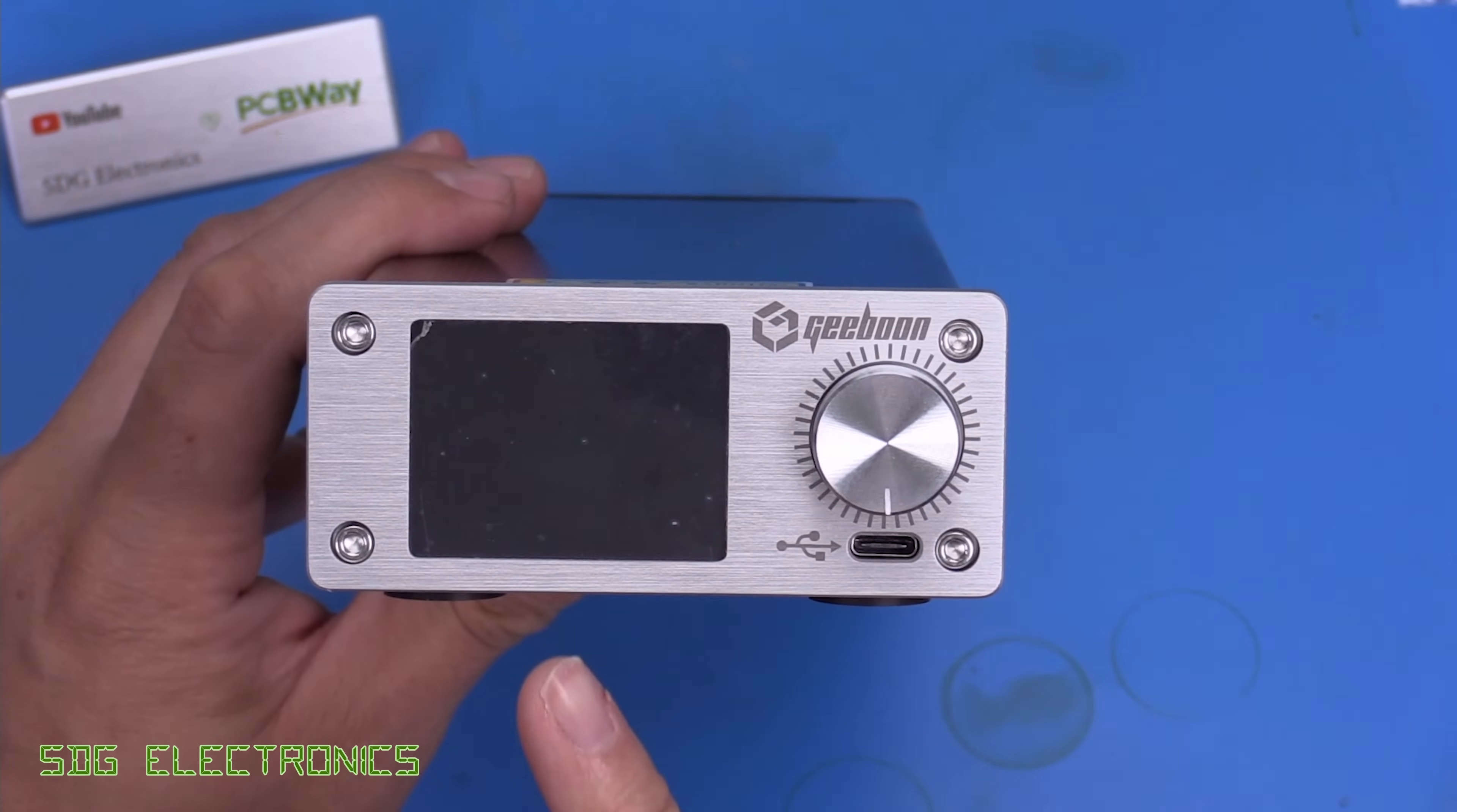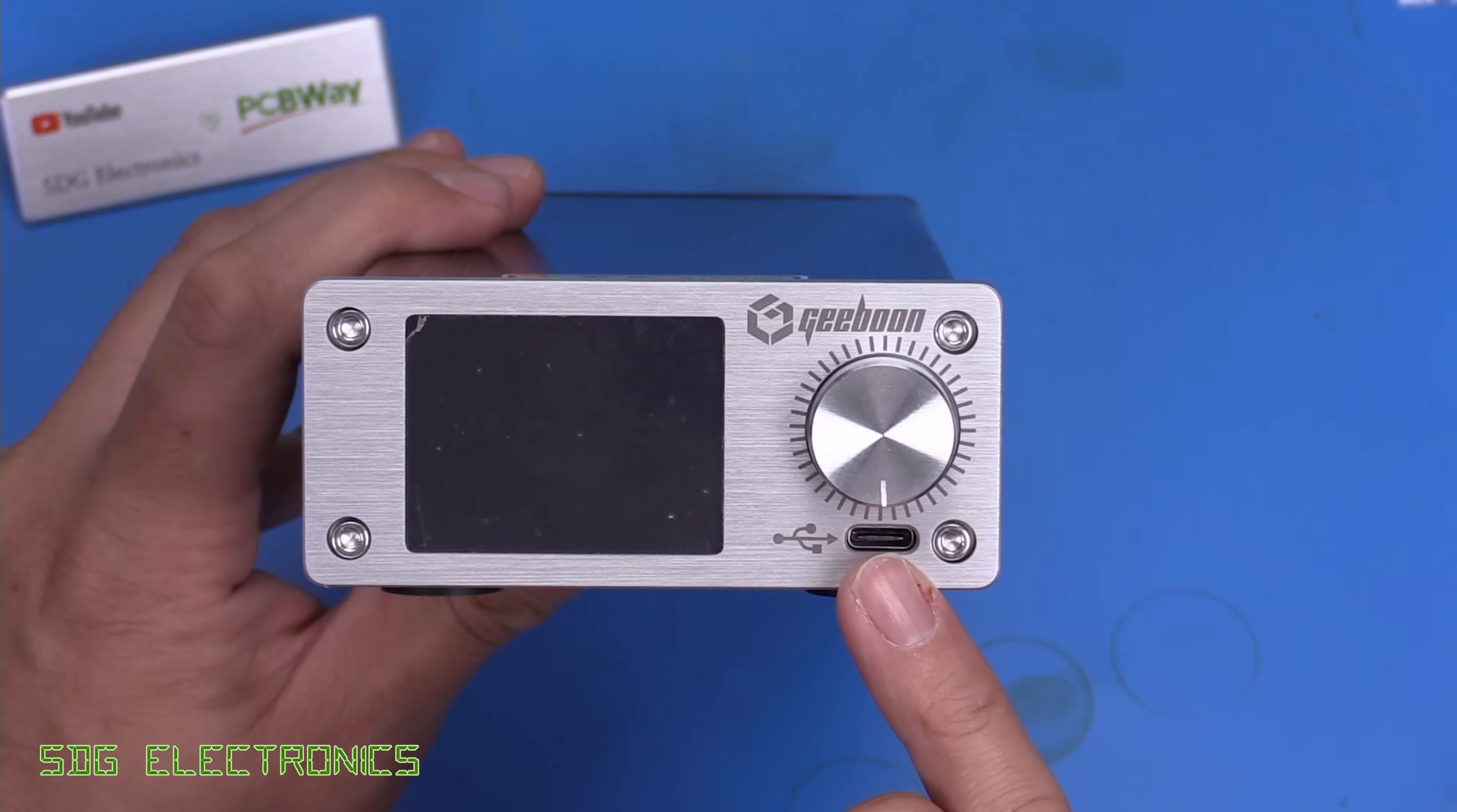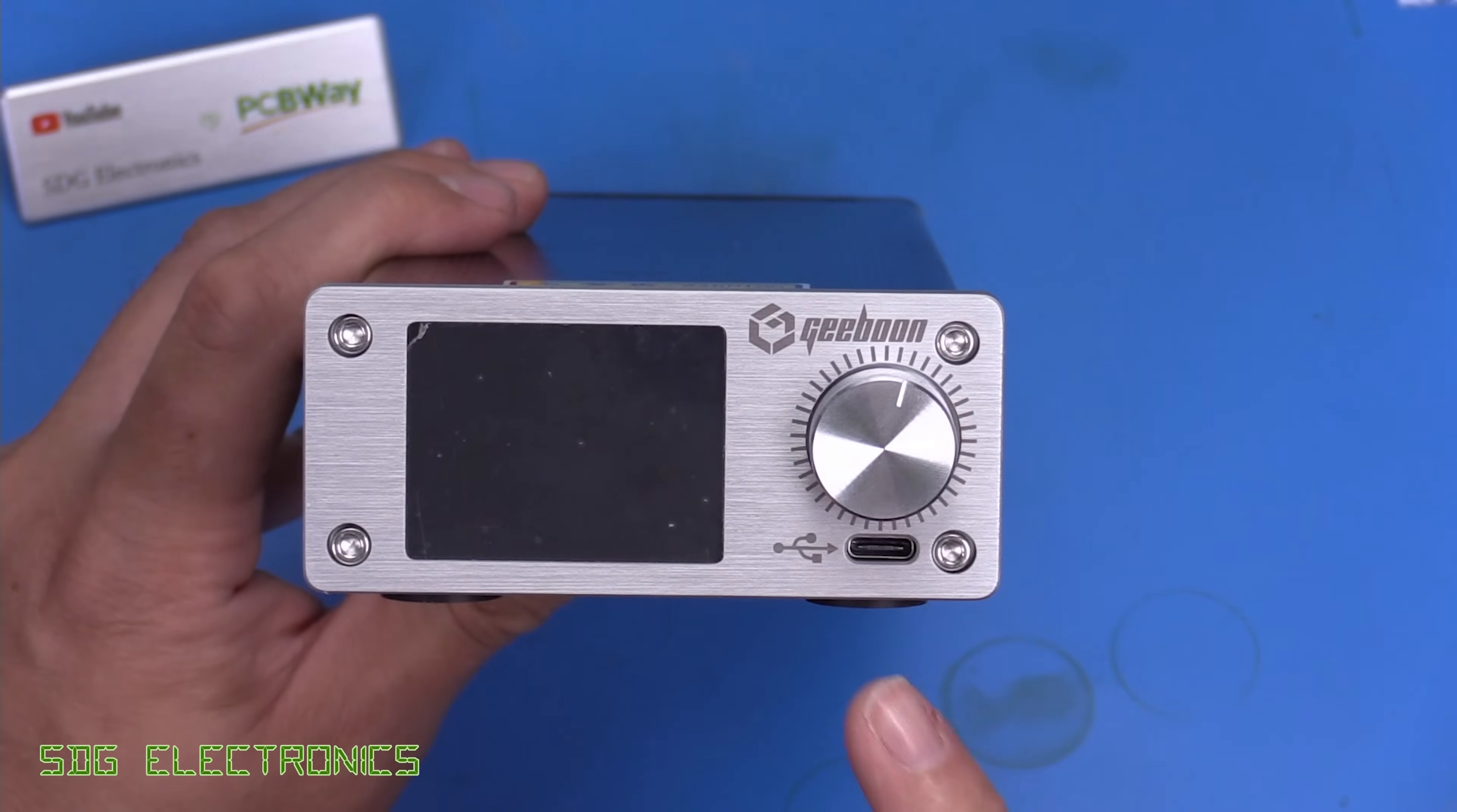And then here's the control unit. So I think this has got a color TFT on the front just here. So nice graphical display, a USB port for firmware updates, and then a rotary encoder with a push button for changing the settings.